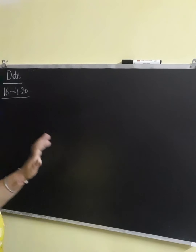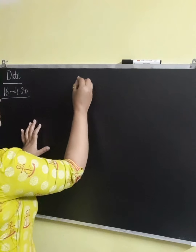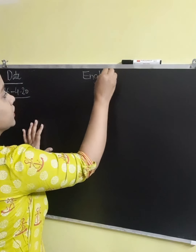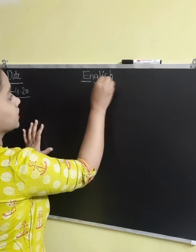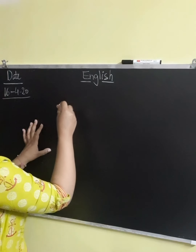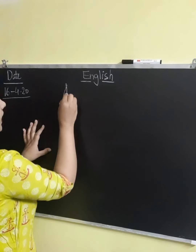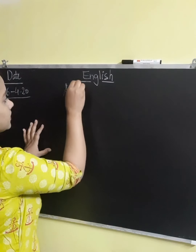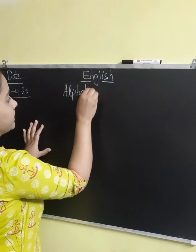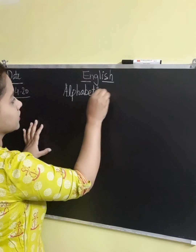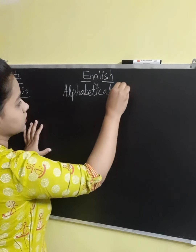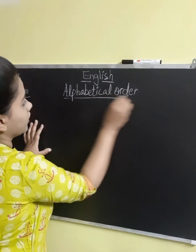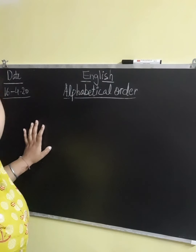So here I picked some 5 words. First of all, just write down English — your subject — on the top of your page. Then the heading is alphabetical order. So what are we doing? We are doing alphabetical order. So this is your topic.